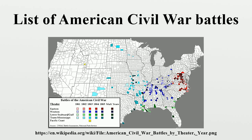Of the estimated 8,000 occasions in which hostilities occurred in the American Civil War, this table and related articles describe the 384 battles that were classified in CWSAC's report on the nation's Civil War battlefields. In addition to the status of battlefield land preservation, CWSAC rated the military significance of the battles into four classes.